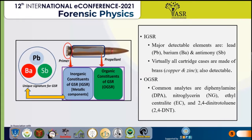Gunshot residue originates from the burning residues of the primer and propellant charge; therefore it has both inorganic and organic fractions as its principal components. The conventional methodologies used for characterization of GSR are based on the detection of inorganic constituents originating from the primer — that is lead, barium, and antimony. The appearance of this trio of components is considered unique for gunshot residue. Furthermore, nitrates, most probably originating from the propellants, are considered the characteristic organic GSR (OGSR) components.